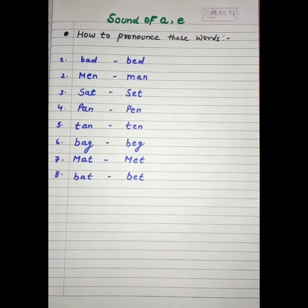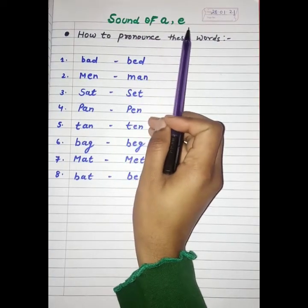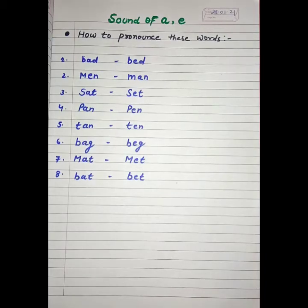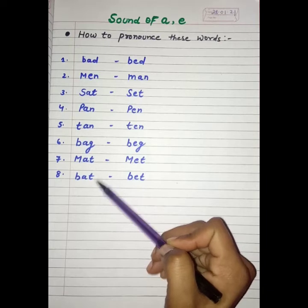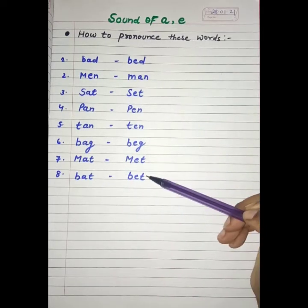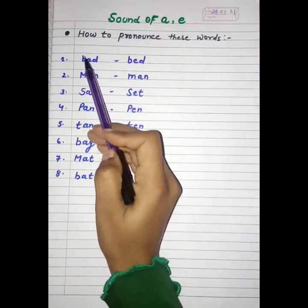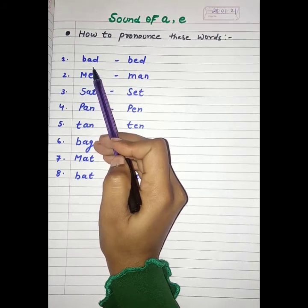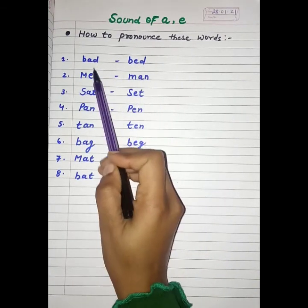So students, for example, sound of A and E — how to pronounce these words? These are some words. On this side there are words with sound of A, and on this side there are words with sound of E. So how will we pronounce them? B, A, D — bad. And B, E, D — bed.